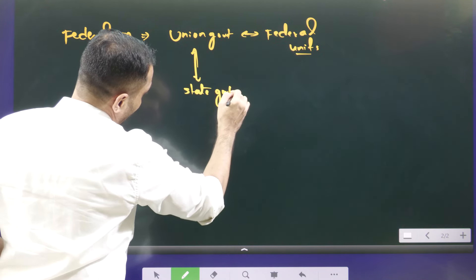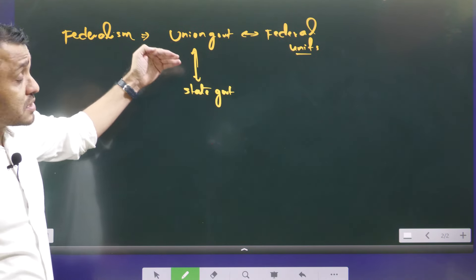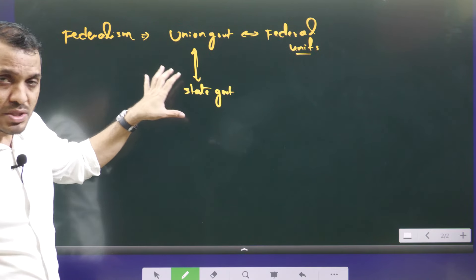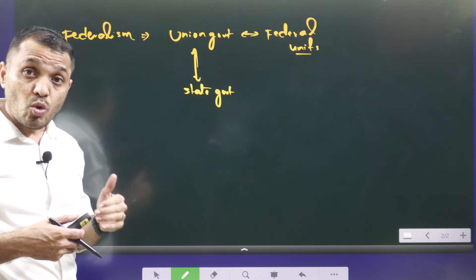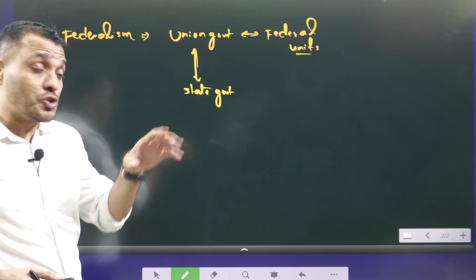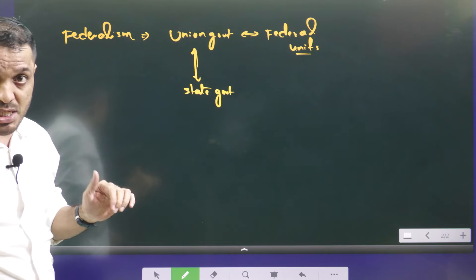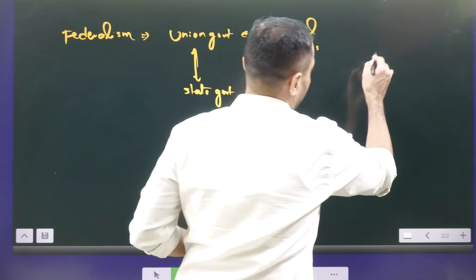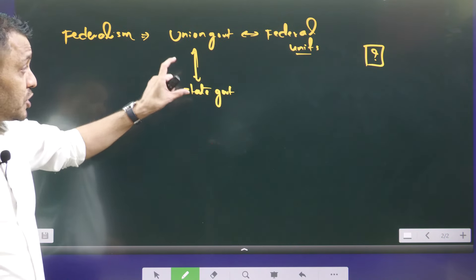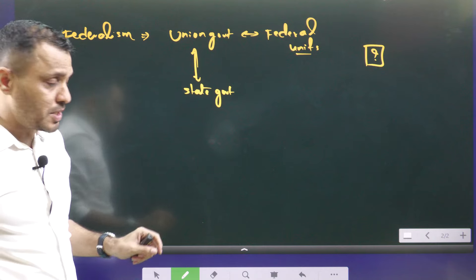In India, we follow the quasi-federal government. That means the central government tends to have more powers compared to states — this is federalism with a unitary basis. We borrowed this kind of feature from another country — comment your answer.